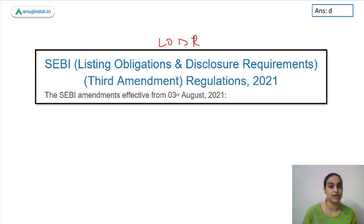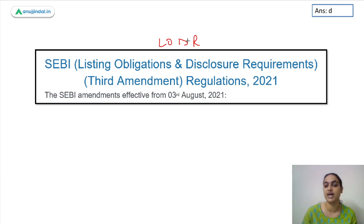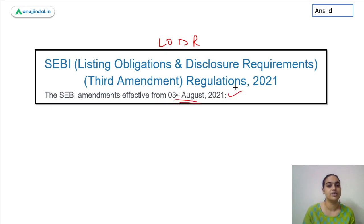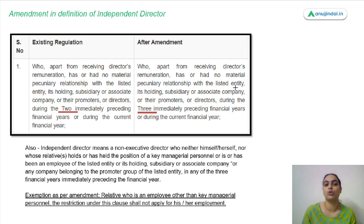The amendments cover the definition of independent directors, their appointment, the audit committee, and other committee compositions when it comes to independent directors. These amendments are effective from the 3rd of August.